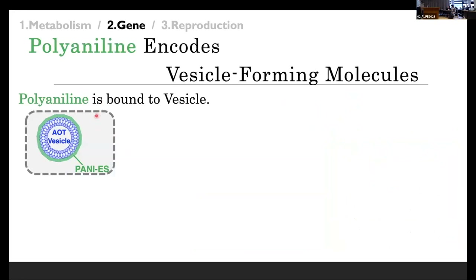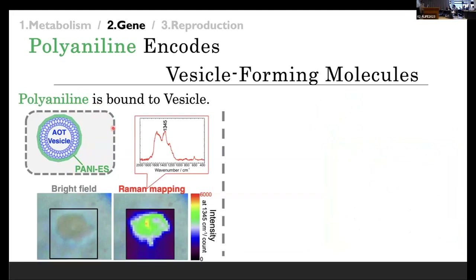What is interesting is that this polyaniline — the PANI-ES structure — can encode vesicle-forming molecules in a sense. Such polyaniline is formed and bound to the vesicle surface, and this is confirmed by the Raman mapping technique. Using the characteristic Raman peak for the PANI-ES, we can map the distribution of PANI-ES. Comparing these two pictures, we can obviously see that the PANI-ES structure is almost homogeneously distributed on the vesicle surface.